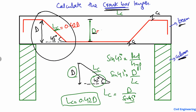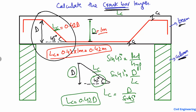Now, for example, if D is 1 meter, then the crank bar length LC = 0.42 × 1 meter = 0.42 meters. That is how you find out the crank bar length.